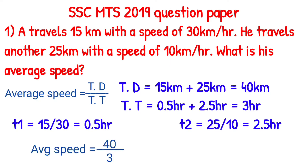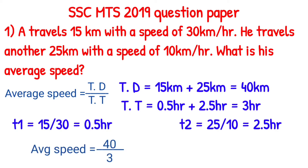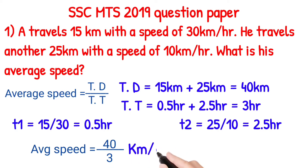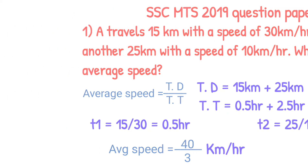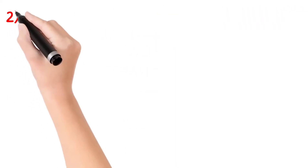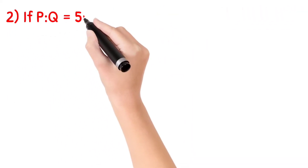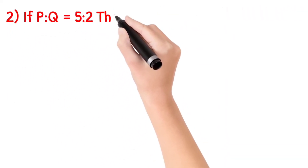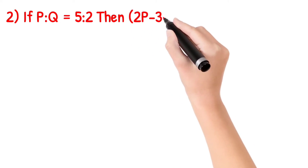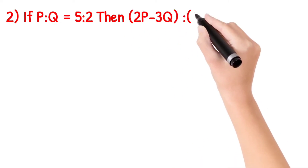Average speed equals total distance divided by total time. Total distance is 40 km, total time is 3 hours. So the average speed is 40 divided by 3.